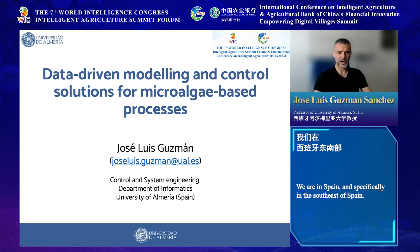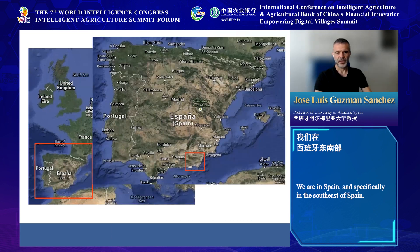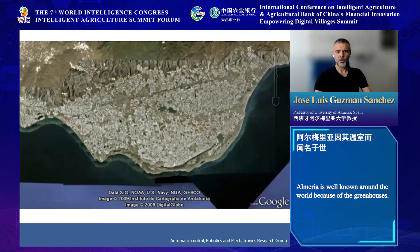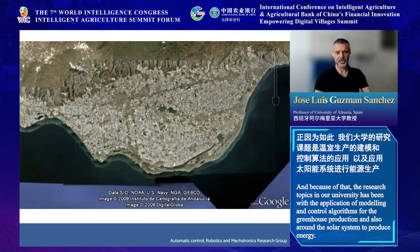Let me show you where we are. We are in Spain, specifically in the southeast of Spain. Almeria is very well known around the world because of its greenhouses — it is considered the biggest concentration of greenhouses in the world. The main reason is because Almeria is the European city with the most sunny hours per year, and because of that our research topics have been the application of modeling and control algorithms for greenhouse production and also for solar systems to produce energy.